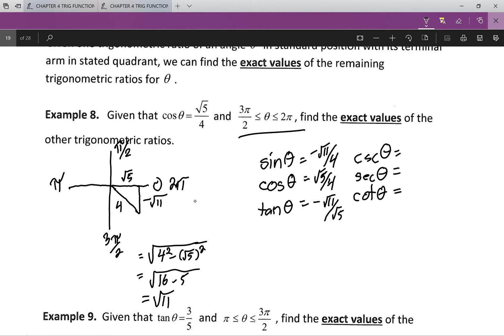And then from here, all we do is reciprocate: negative 4 over root 11, 4 over root 5, and negative root 5 over root 11.